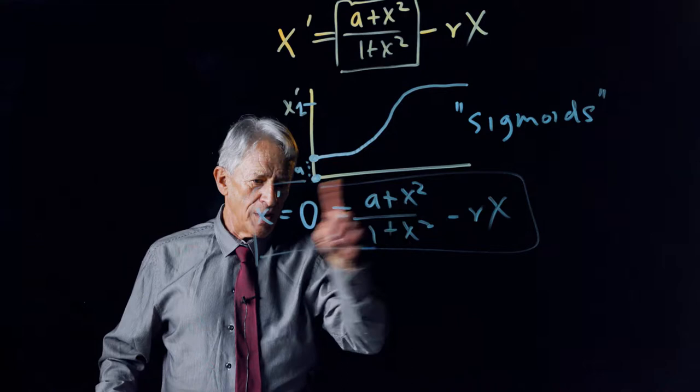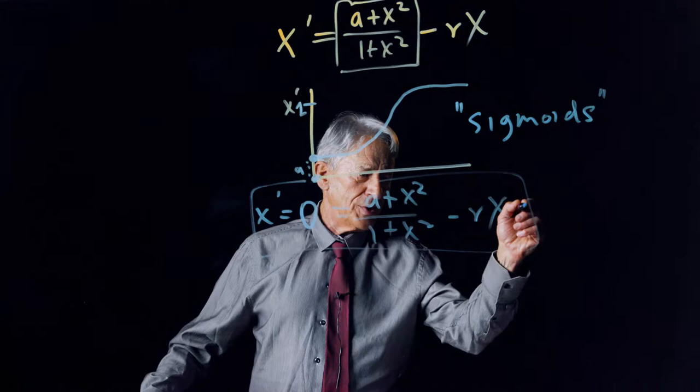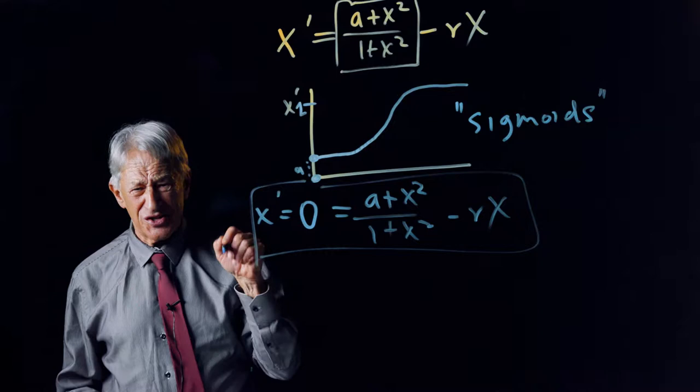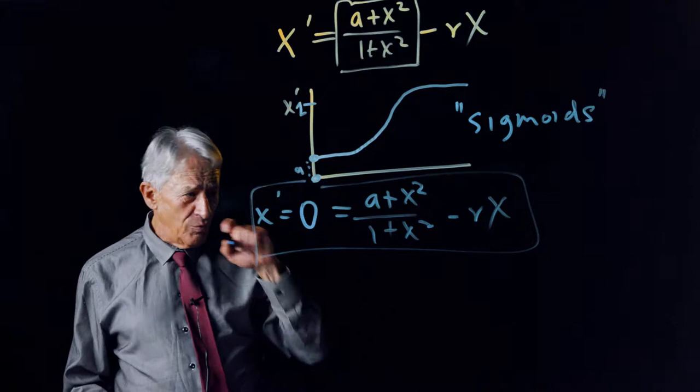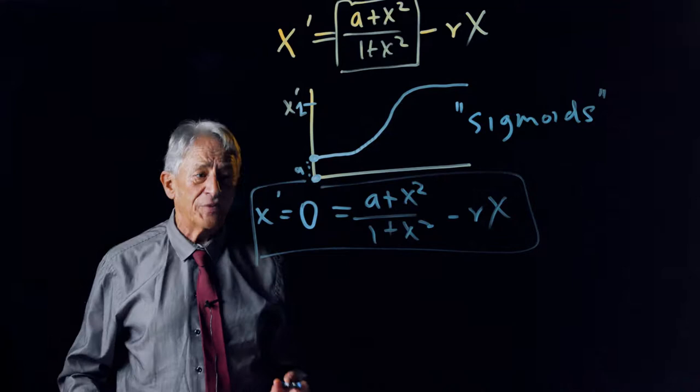That's still 0, and now we have a 1 plus x squared product over here. That's going to give us a cubic term, an x cubed term. And that's nasty and ugly, and we definitely do not want to solve a cubic equation. But there's a much better way, and that is to solve it graphically.